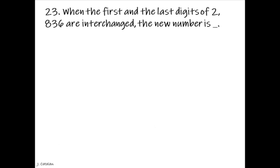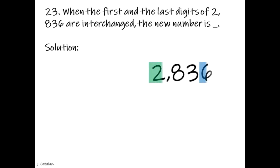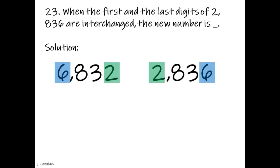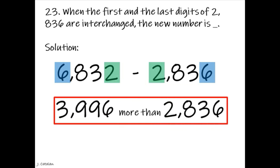When the first and the last digits of 2,836 are interchanged, the new number is underscore. Solution. When the first and the last digits of 2,836 are interchanged, it will become 6,832. There are instances that in solving numerical reasoning, the answer and computation depends on the given options. 6,832 subtracted by 2,836 gives 3,996, which is more than 2,836.